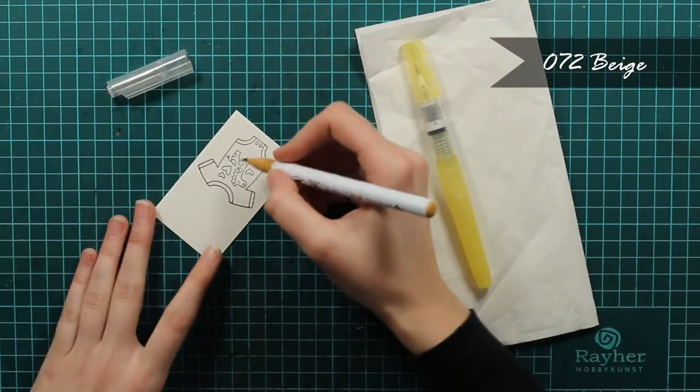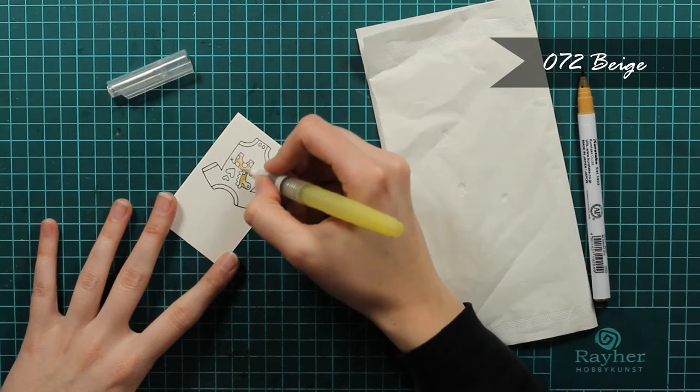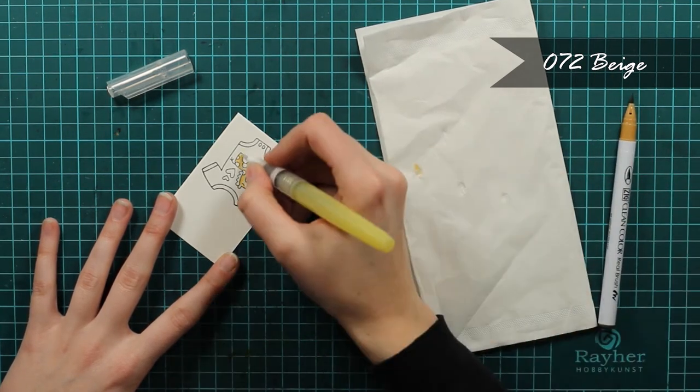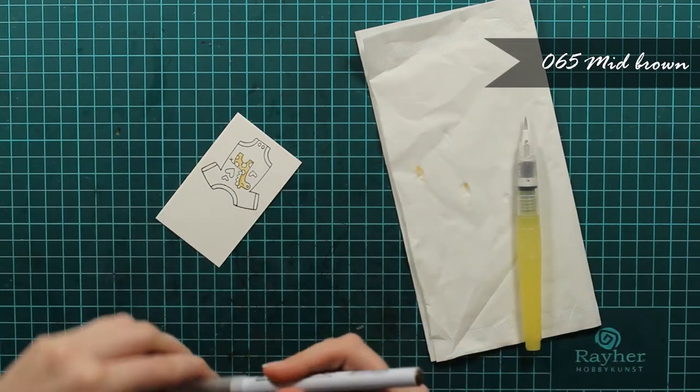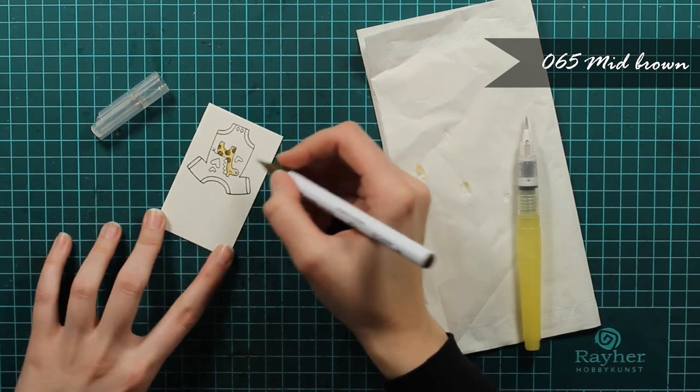So first I stamp my onesie in Onyx Black Ink and I will watercolor it with my Zigs. As you can see I will start with the giraffe and I will just color it with two colors. I won't bother much because this is really a small image.